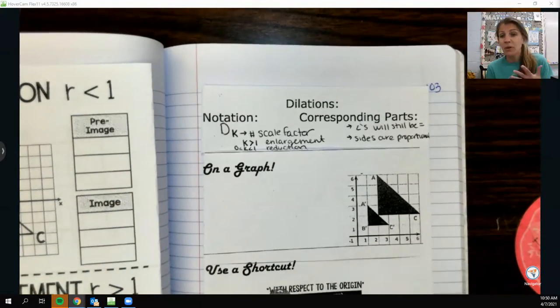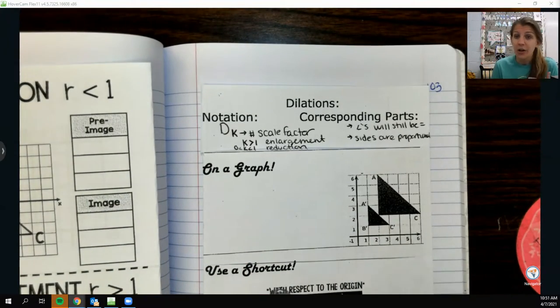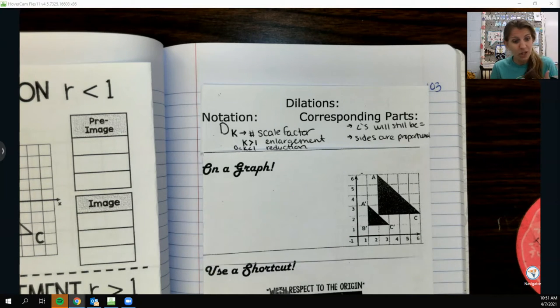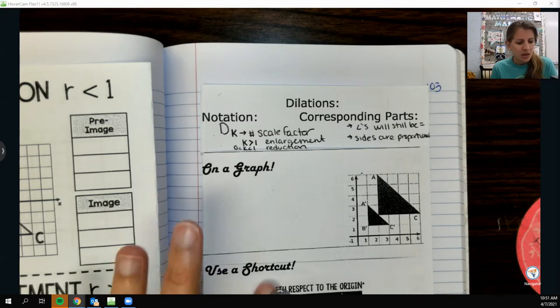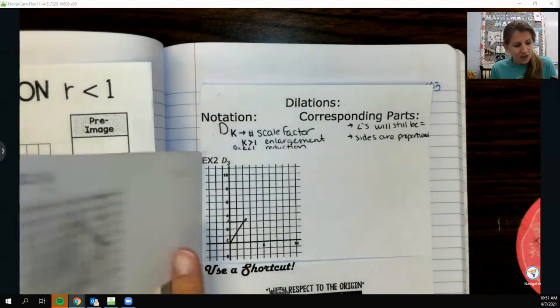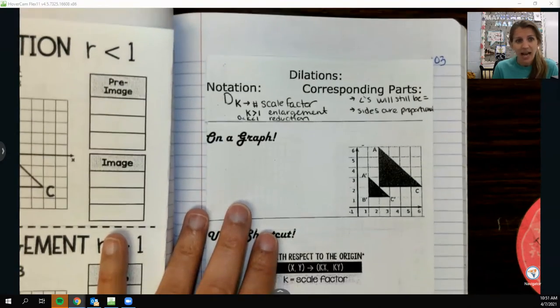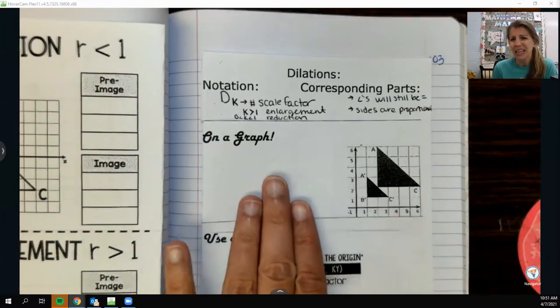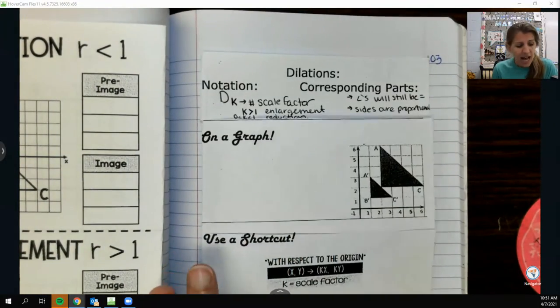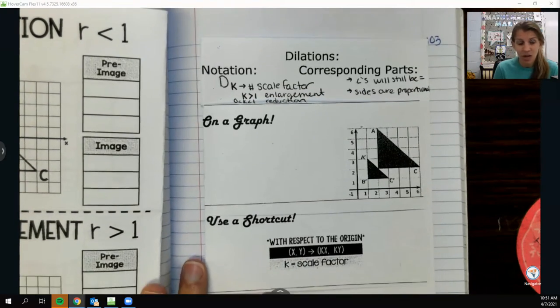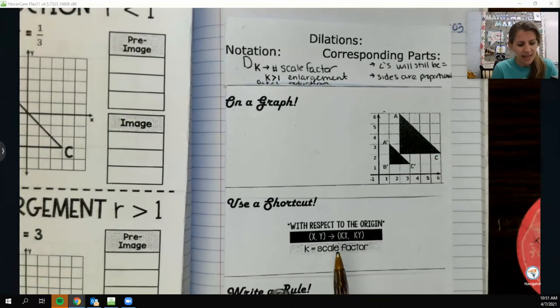And then going back to what I was saying about scale factor, it is a number, it is a multiple of how much bigger or smaller you are. So if K is greater than 1, so like 2 or 3 or 4 or 5 or 6 or even 1.5, you will get bigger or be an enlargement of your pre-image.